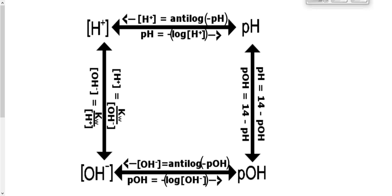This square diagram will be really helpful as we practice converting between hydrogen concentration and pH, or hydroxide concentration and pOH. To go from hydrogen to pH — or hydroxide to pOH — hit the log button and drop the negative sign. Going in reverse, we use the antilog (the 10^x button), which is usually accessed by pressing Second Function and then the log button. That lets us go backwards from pH to hydrogen concentration, or pOH to hydroxide concentration.